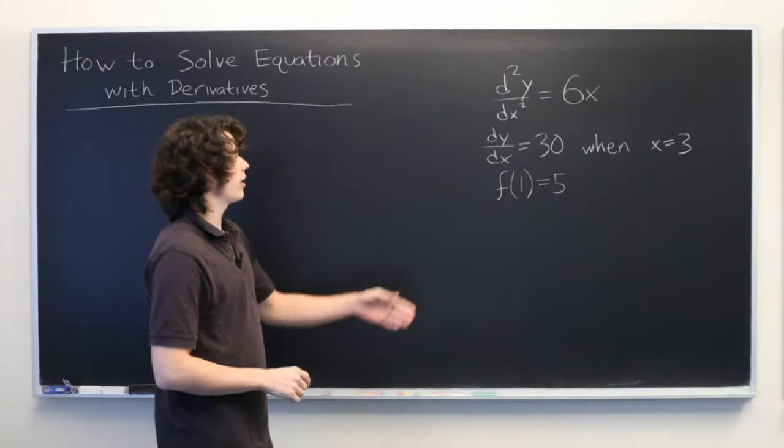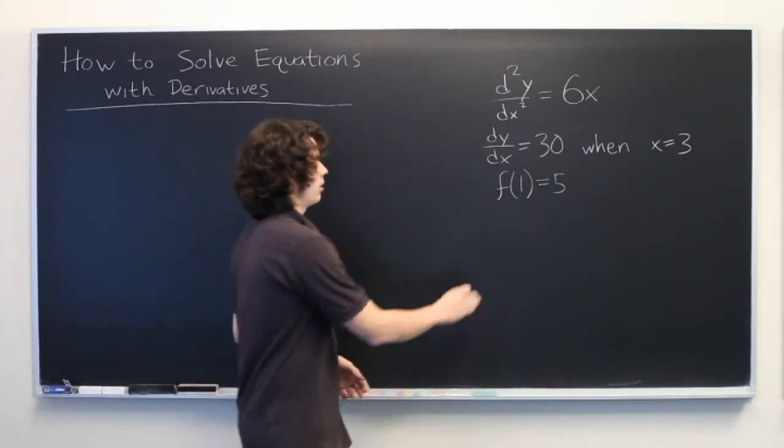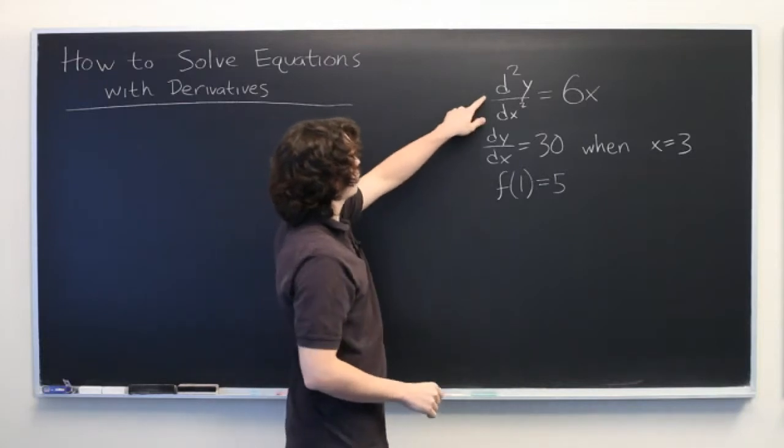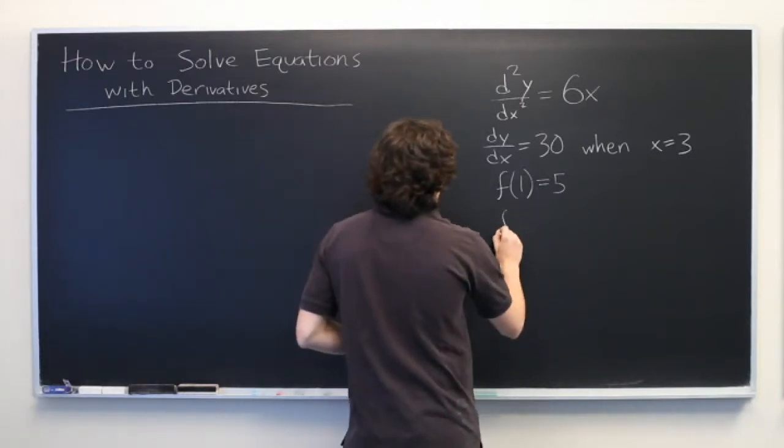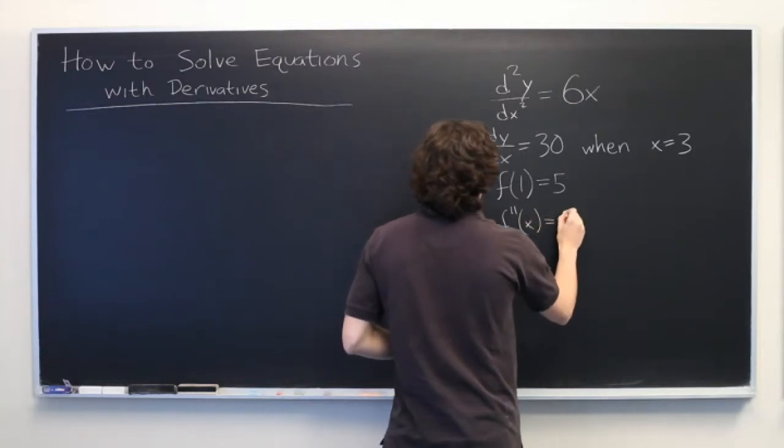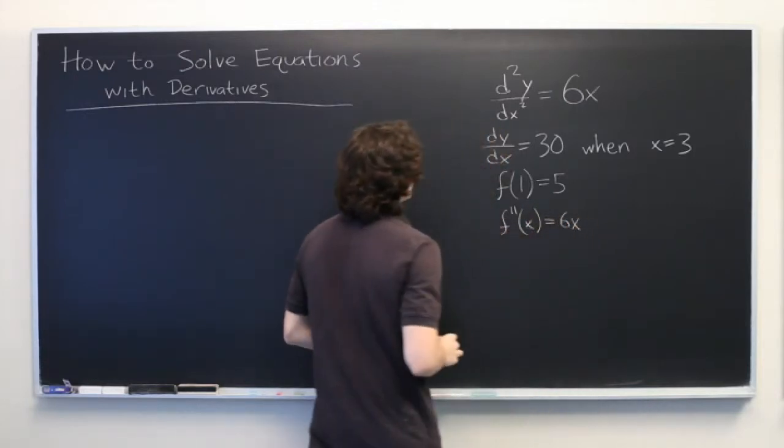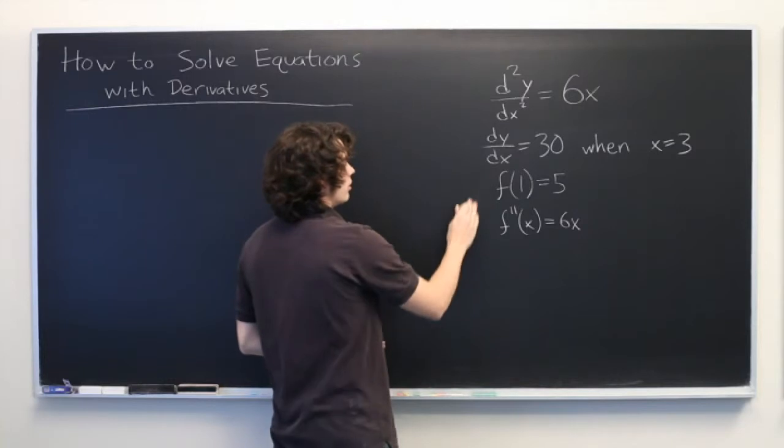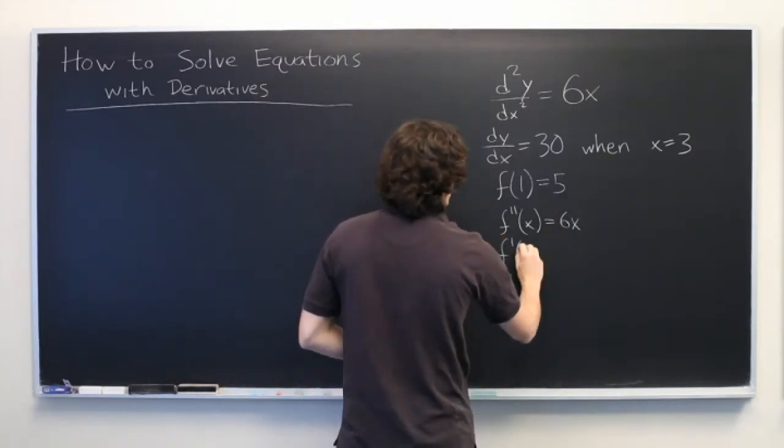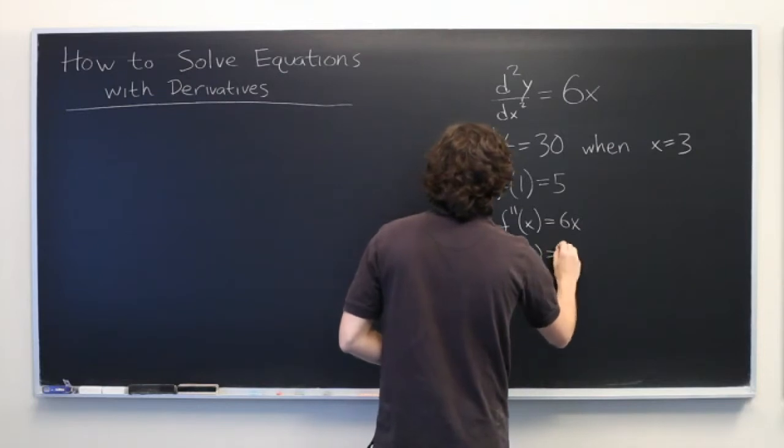First, let's try to rewrite these pieces of information in similar notation. Well, this first one, we can say f double prime of x is equal to 6x. And here, this is equivalent to saying f prime of 3 is equal to 30.